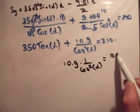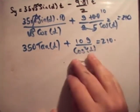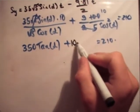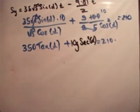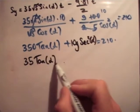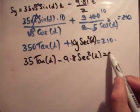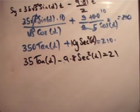This is 350·tan(α) - 10g·sec²(α) = 210. Because remember, sec² = 1/cos². So I'm just going to rewrite this. That's 10g·sec²(α). Alright, so let's rearrange that again. We'll divide across by 10. I think we're doing okay so far.